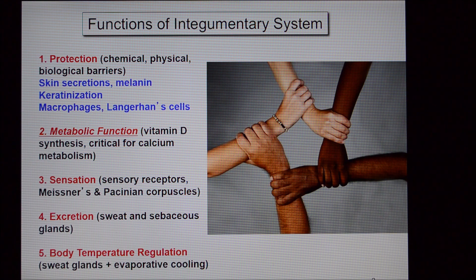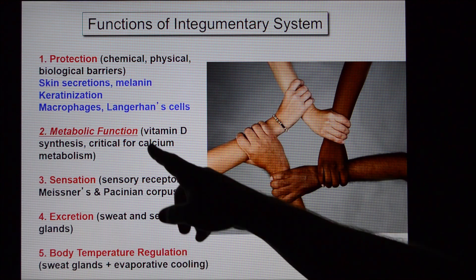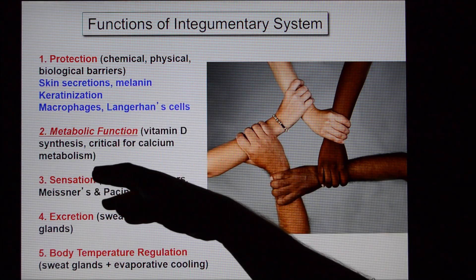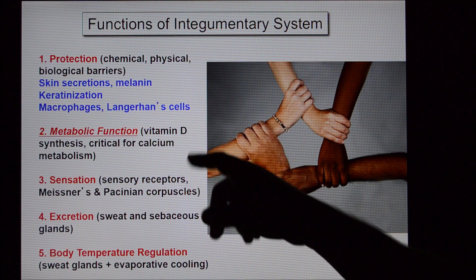The skin also protects us from a variety of other things. For instance, your skin produces melanin, the UV protectant for our body. Melanin serves to protect underlying tissues, cells, and nuclei from damage from ultraviolet radiation, and it works very well. Keratinization toughens the skin to handle abrasion. The skin also has macrophages and Langerhans cells, which are very good at defending us versus bacterial invaders specifically.